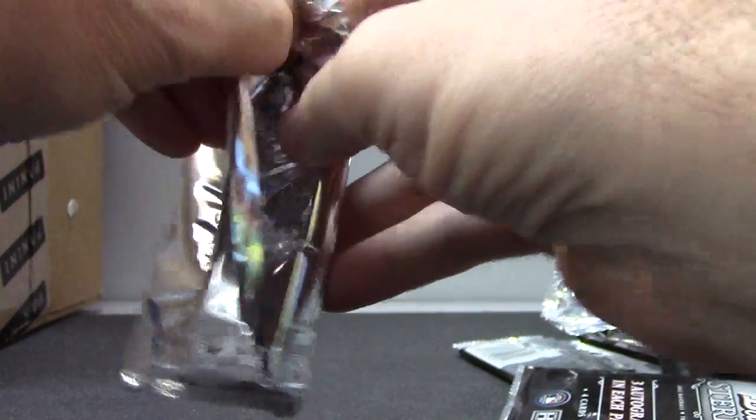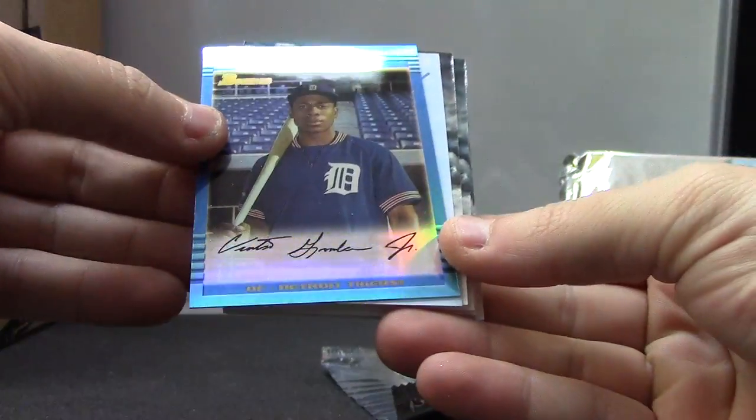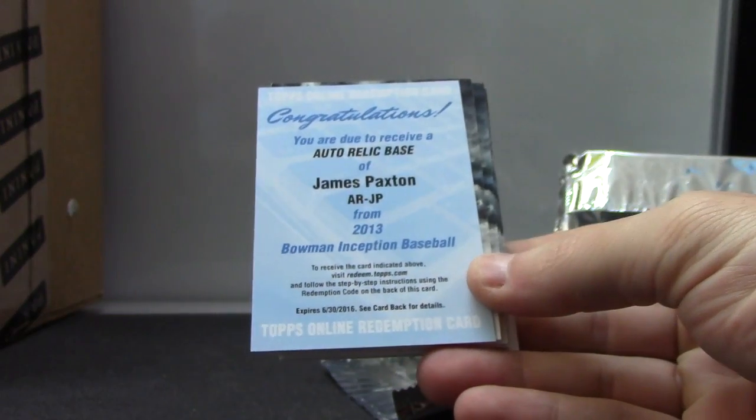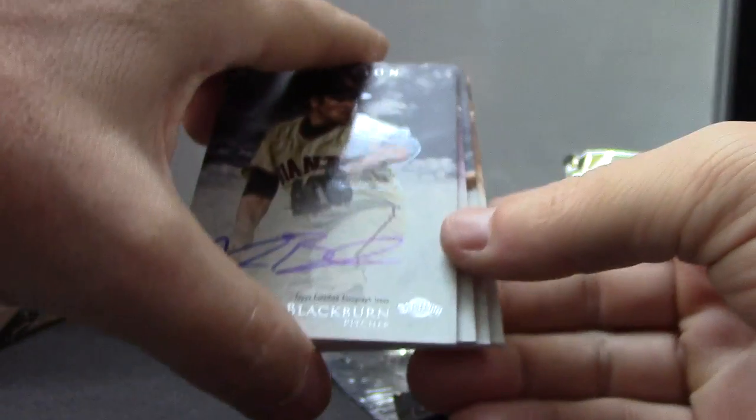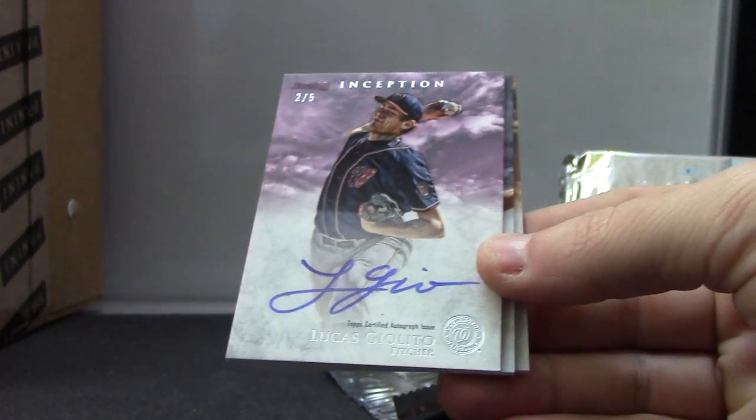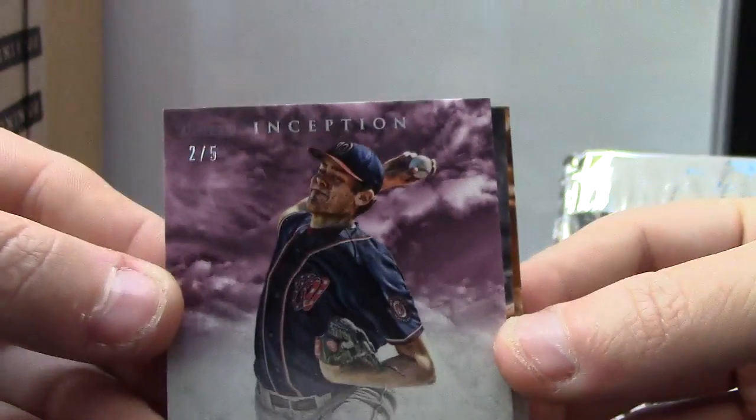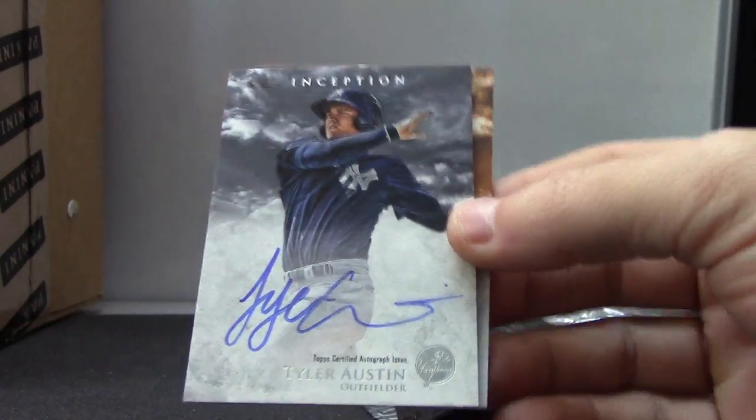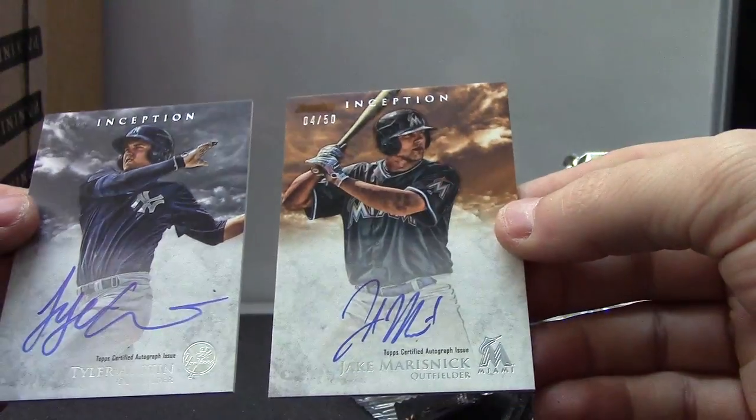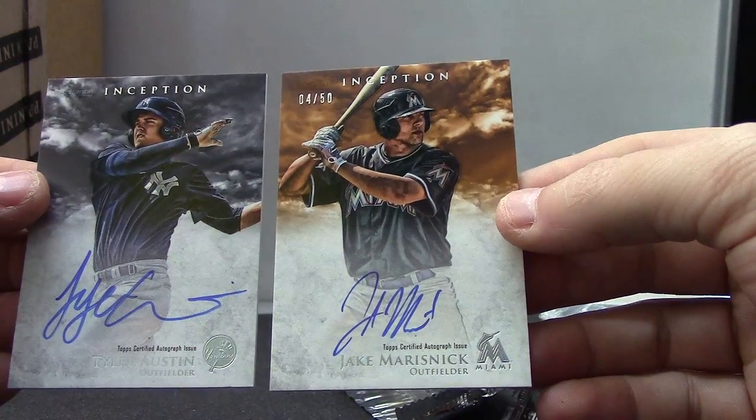The last one here, CRG2. We have Curtis Granderson, James Paxton relic autograph. Clayton Blackburn, two of only five purple, two of five. Lucas Giolito, that's a solid case. Tyler Austin and number 250, Jake Marisnick. Pretty solid, a lot of color in there, one of one, dual autographs, the whole nine. There you have it, Cole, CRG2, appreciate it guys, getting on the way, see ya.